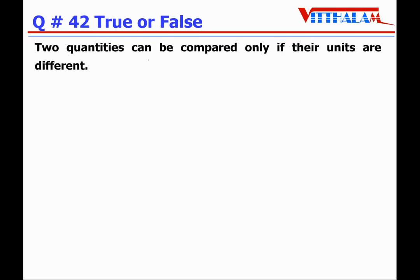Question 42: Two quantities can be compared only if their units are different — False. They are supposed to be the same. The units are supposed to be the same.